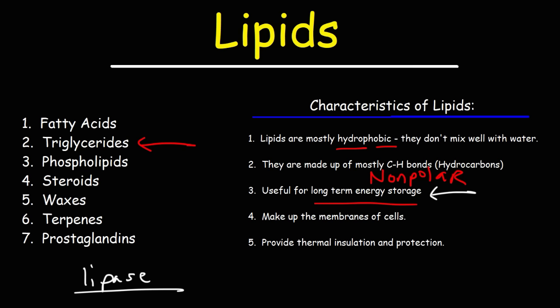Now lipids also play a major role in the cellular membrane. In fact, the cell membrane is mostly made up of phospholipids. Now lipids also provide thermal insulation and protection. But now let's talk about each of these lipids one at a time.